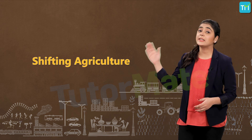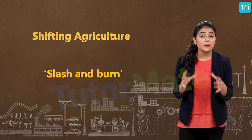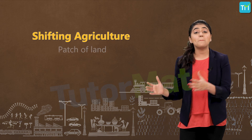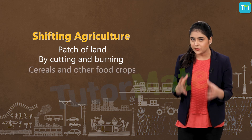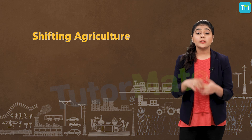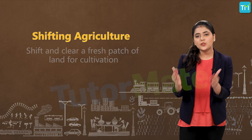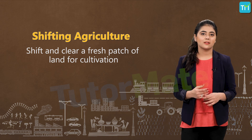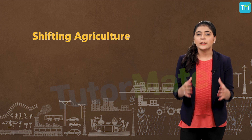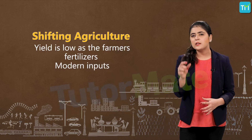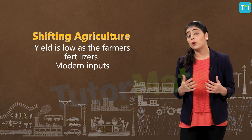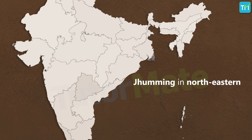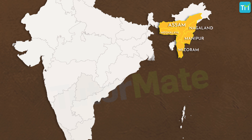Number two is shifting agriculture. This is a type of slash and burn agriculture. Farmers clear a patch of land by cutting and burning and produce cereals and other food crops to sustain their family. When the soil fertility decreases, the farmers shift and clear a fresh patch of land for cultivation. This allows nature to replenish the fertility of the soil, but the yield is low as the farmers do not use fertilizers or other modern inputs. It is known by different names in different places — for example, Jhooming in the north-eastern states of Assam, Meghalaya, Mizoram and Nagaland; Pamlu in Manipur; and Deepa in Bastar district of Chhattisgarh and in Andaman and Nicobar Islands.